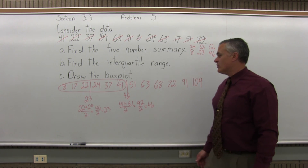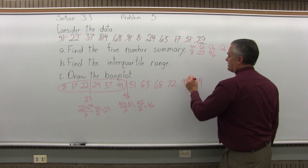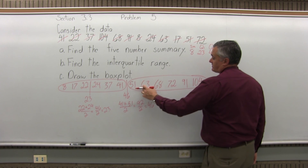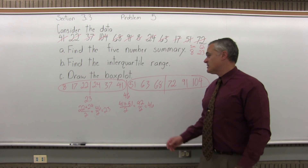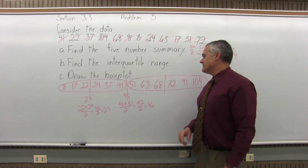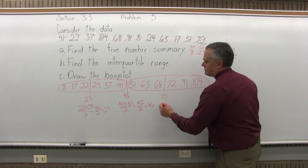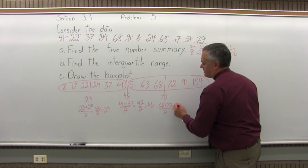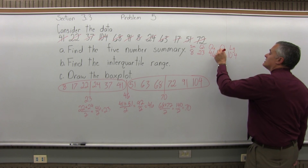Finally, Q3 is the median of the upper half of the data, not including Q2. Q3 would be the median of the larger six values: 51, 63, 68, 72, 91, and 104. Again, six data values — six is even — so the midway point falls between position 3 and position 4, between 68 and 72. 68 plus 72 is 140, divided by 2, which is 70. So that's Q3.